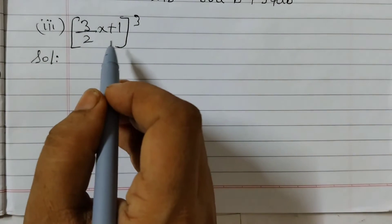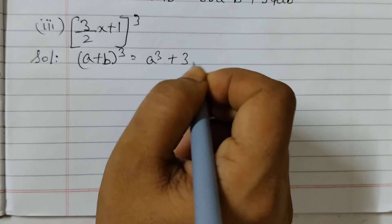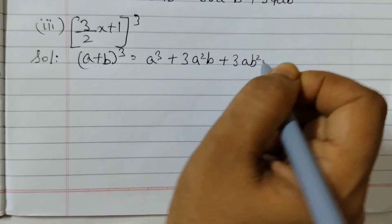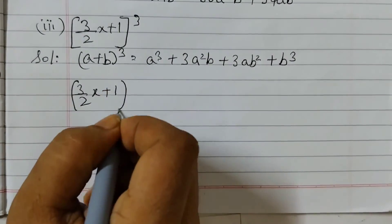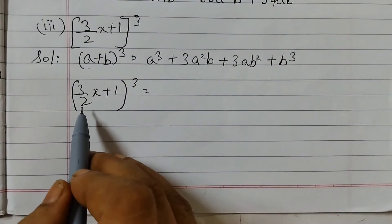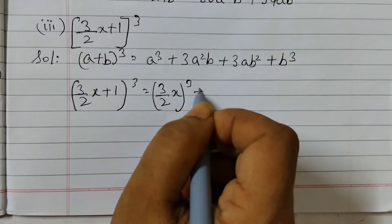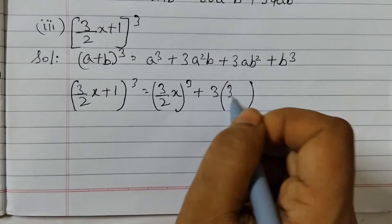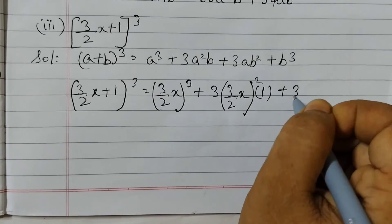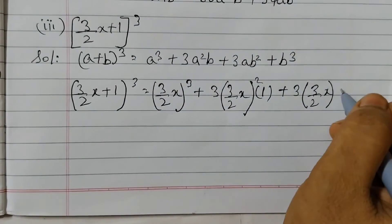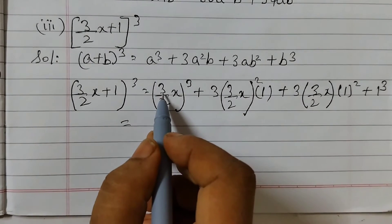Third one: (3/2 x + 1)³. Here we use the identity (a + b)³ = a³ + 3a²b + 3ab² + b³. Here a is 3/2 x and b is 1. So a³ is (3/2 x)³, plus 3 × (3/2 x)² × 1, plus 3 × (3/2 x) × 1², plus 1³.